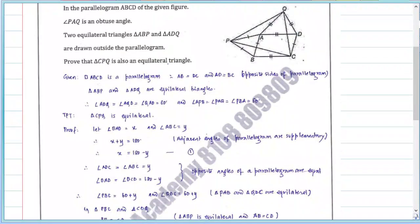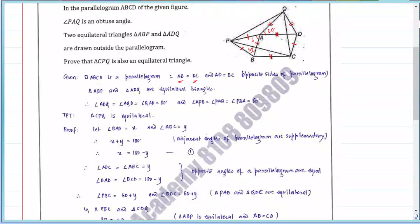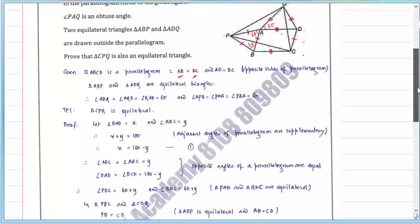So basically, in parallelogram ABCD, AB is equal to DC and BC is equal to AD — opposite sides of a parallelogram are equal. Triangle ABP is equilateral and triangle QAD is equilateral, so all sides are equal. Also, each angle of these equilateral triangles is 60°.